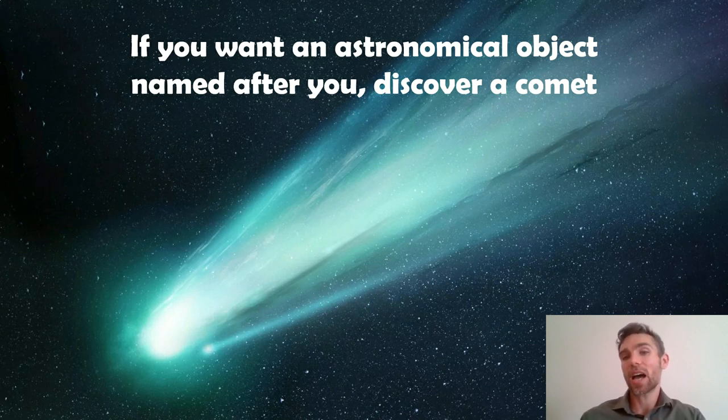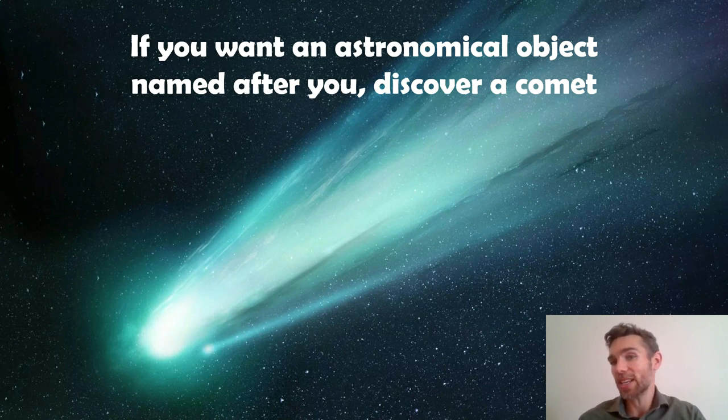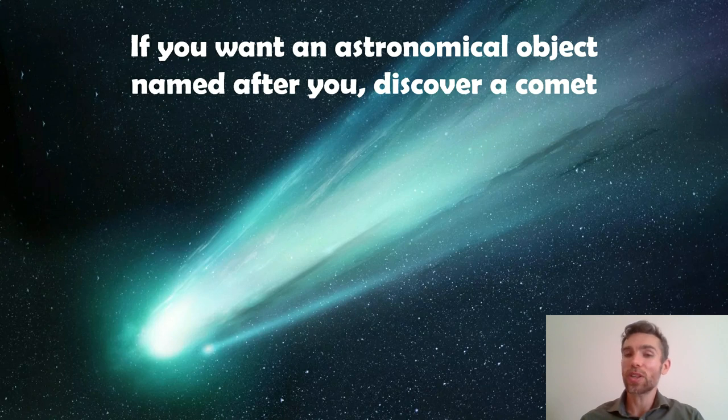However, if you're really set on having your name associated with an astronomical object, go and discover a comet. Pretty much most comets will be assigned the discoverer's name. I'm going to do a separate video on that, explaining the naming of comets, but they will quite often take the discoverer's name. So go out there, get your telescope up, and go discover a comet. Maybe you can have your name associated with an astronomical object.